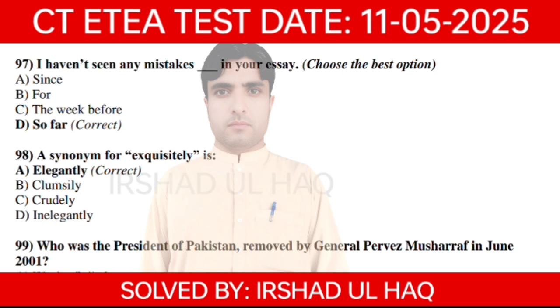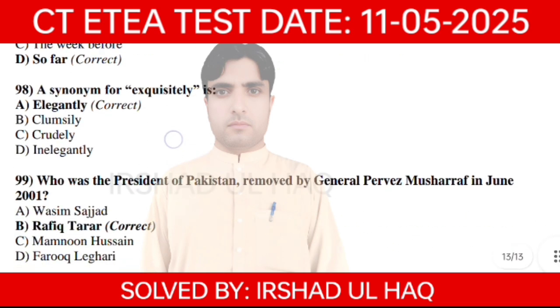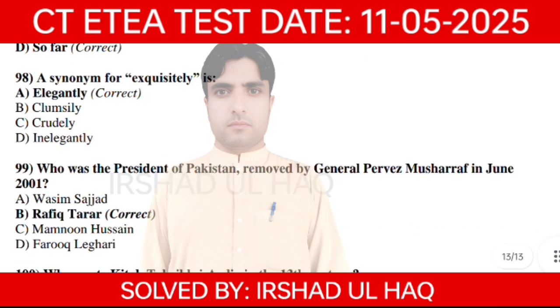I haven't seen any mistakes in your essay so far. D is the correct option. A synonym for 'exquisitely' — C is the correct option: elegantly. Question number 9: Who was president of Pakistan removed by the janitor — which is the correct option? Option number B: Rafiq Tarar.